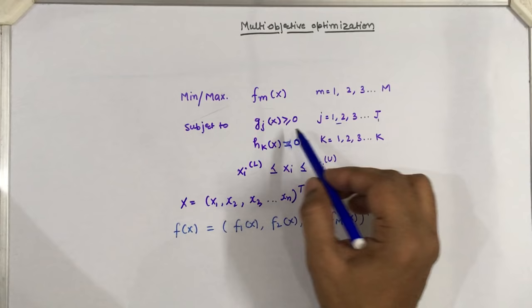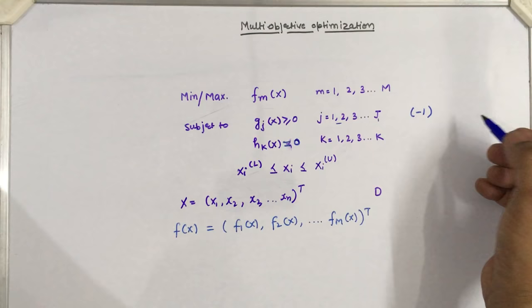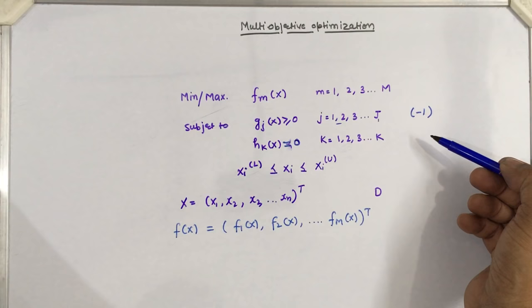The duality principle is also applicable to the objective function: if a minimization problem is given, we can multiply the fitness function by minus one to convert it into a maximization problem.